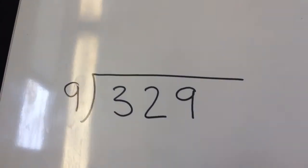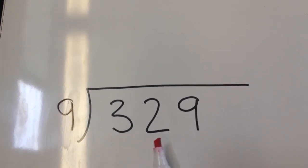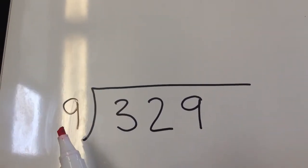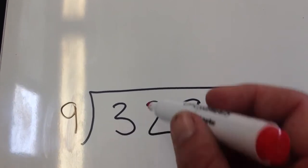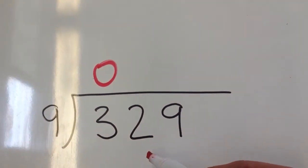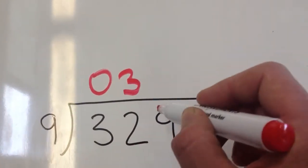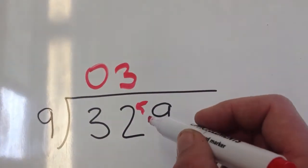And the last example, within our 9s times table: 329 divided by 9. 9s into 3, can't do. 9s into 32: 9 threes are 27, and I've got 5 left over. So now we have 59.